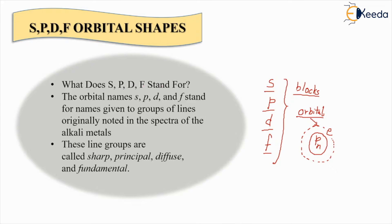What does S, P, D, F stand for? The orbital names S, P, D, and F stand for names given to the group of lines originally noted in the spectra of alkali metals. Now what do we mean by spectra of alkali metals? Over here we are talking about the classification or the block system which was given to the periodic table by Mendeleev. These lines are called sharp, principle, diffuse, and fundamental.